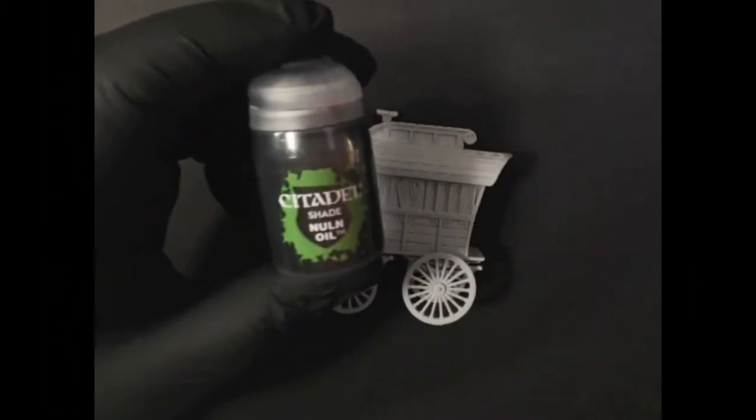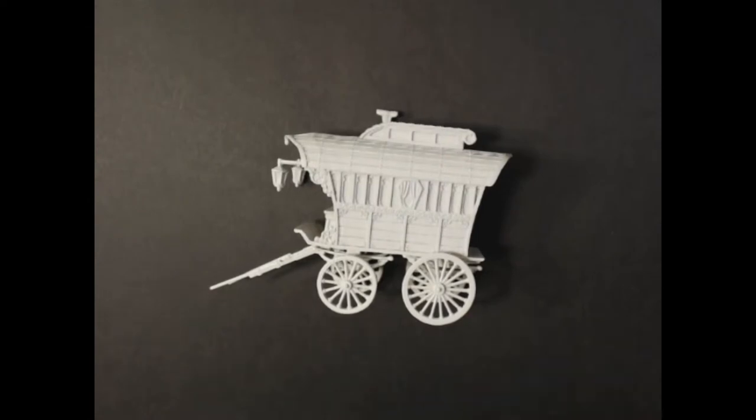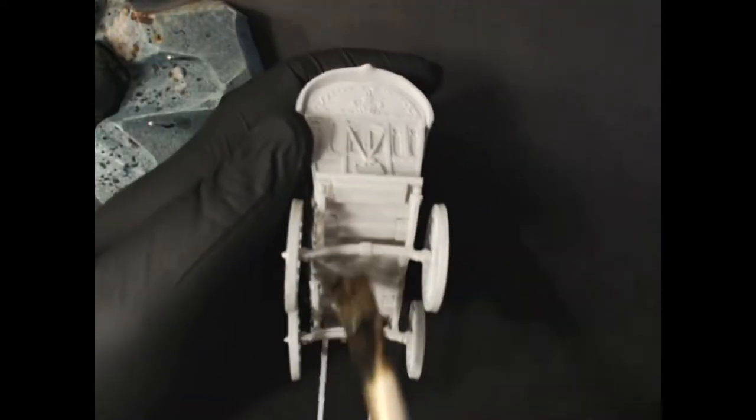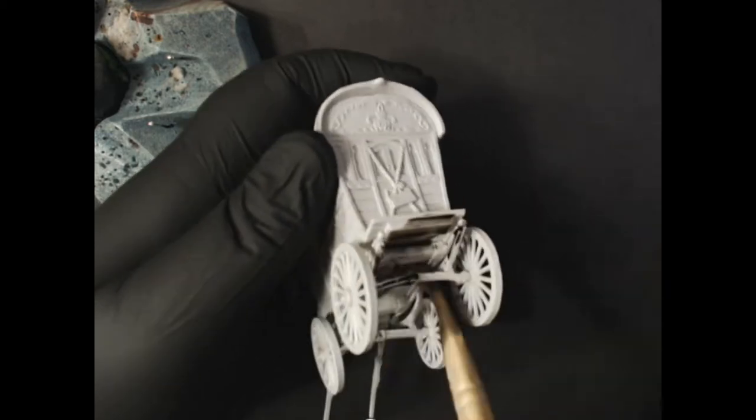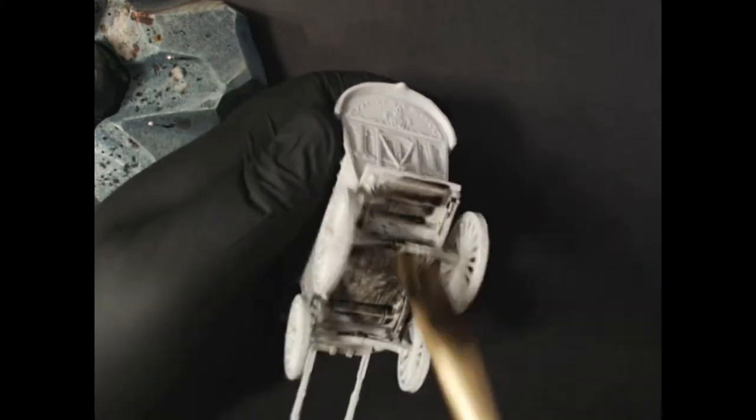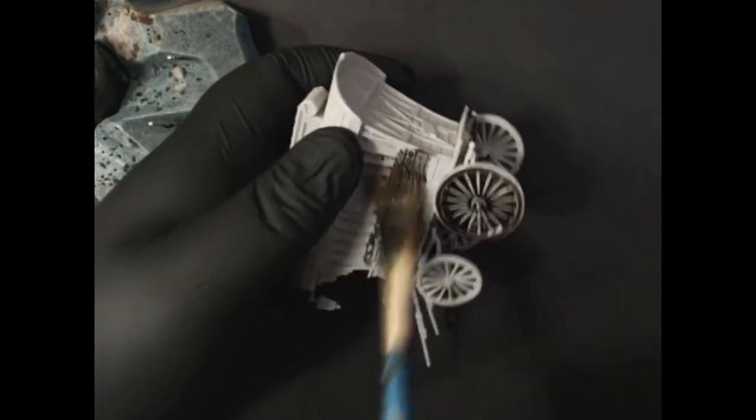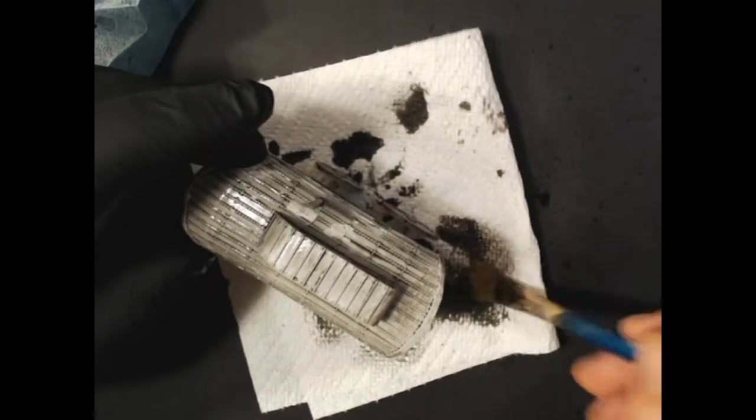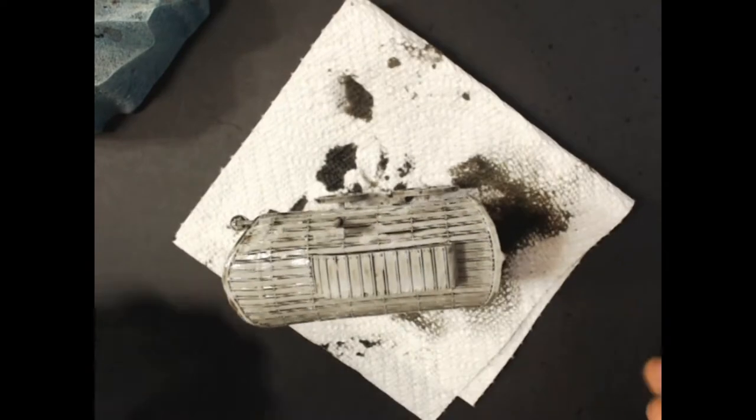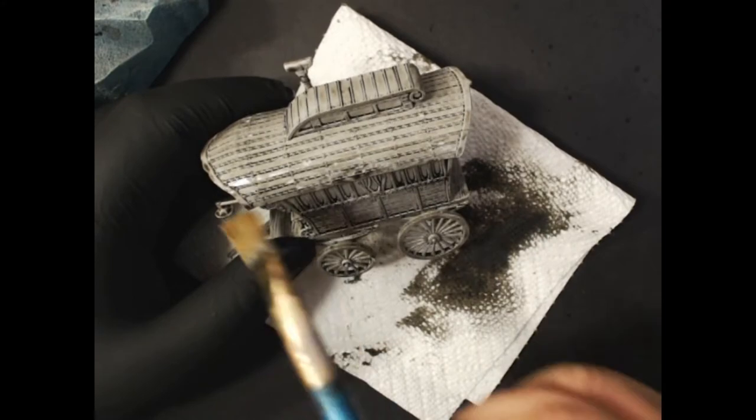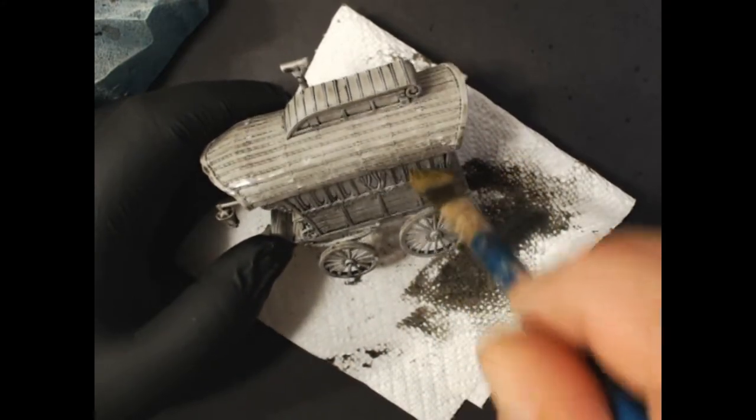I'm going to start off with some Citadel Nuln Oil Wash and coat the entire model. I would suggest wearing some gloves for this if you have them. So just get a large brush and rub it all over it. I want to make sure not to let it pool up too much in any areas. So right now I'm just taking my brush, wicking away any areas where it's pooled, wiping it on a paper towel.